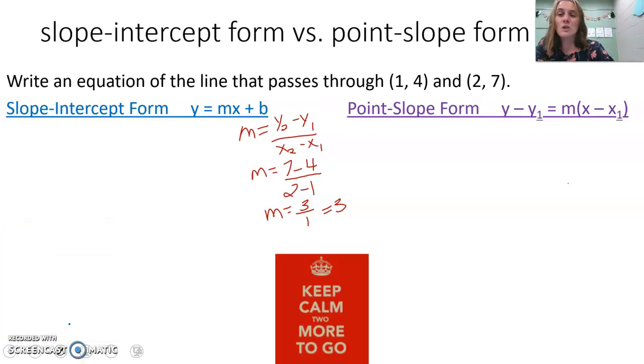I'm going to start with slope-intercept form. y = mx + b is now y = 3x + b. I can pick either point. I'm going to use one point for slope-intercept form and one for point-slope form, just so you can see it doesn't matter which point we use. I'm going to use (1, 4) for slope-intercept form.